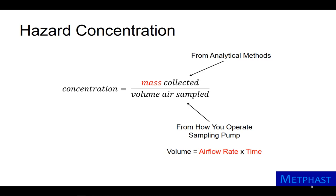Volume is calculated as air flow rate multiplied by the time sampled. Thus, the hazard concentration is a function of three key terms: mass, air flow rate, and time.